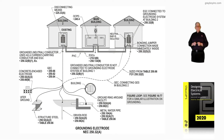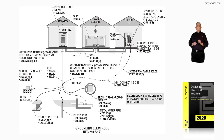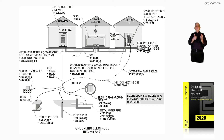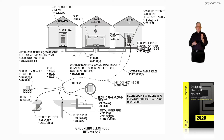This illustration deals with the grounding electrode in accordance with 250.32(A). Looking at the electrodes that could be present in this illustration, in either one of the buildings you see — building one or two — you may have structural steel in the building. You may have a Ufer ground, also called a concrete encased electrode, as shown there.